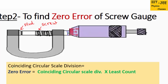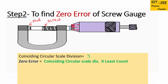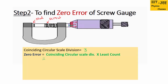To calculate the zero error, first we need to find the coinciding circular scale division. You can see this division is perfectly coinciding with the reference line — the number is 3. The third division is coinciding, and then we multiply this division by the least count: 3 times 0.01 mm gives us 0.03 mm. As this is a positive error, we put a plus sign before this number. If zero were above the reference line, it would be a negative error. So we got positive 0.03 mm as the zero error of this screw gauge.